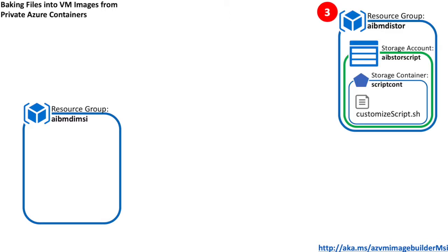Step three is to create a resource group with a storage account, a container, and a script file. The code will create this for you. This is essentially to simulate your own private script repository that resides in a private container.